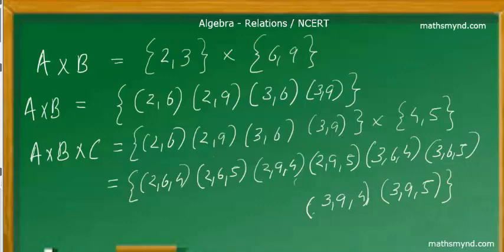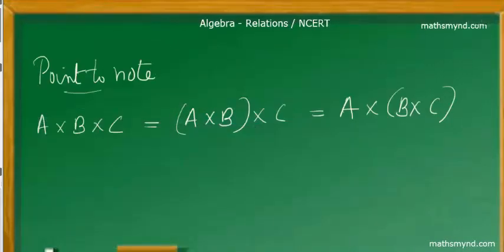An interesting point to note here is that for the Cartesian product of three sets, A times B times C, the order in which you do this particular operation doesn't alter the result. So (A×B)×C is equal to A×(B×C). It's associative in the sense that the order doesn't change, and what we can infer from this